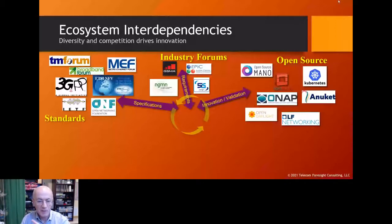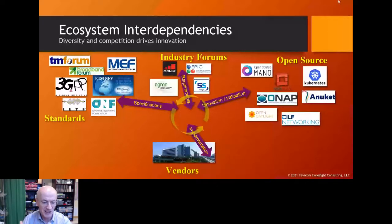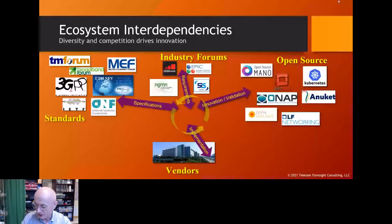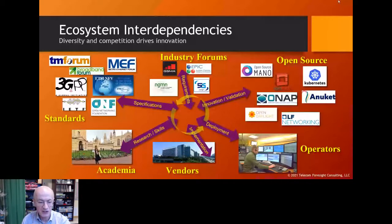Open source can also validate specifications — work in OPNFV was partly about validating ETSI NFV specs. Then vendors get involved, selling products to network operators. One thing that sometimes gets neglected is where we get the people: from academia and communities, producing research and new skills.